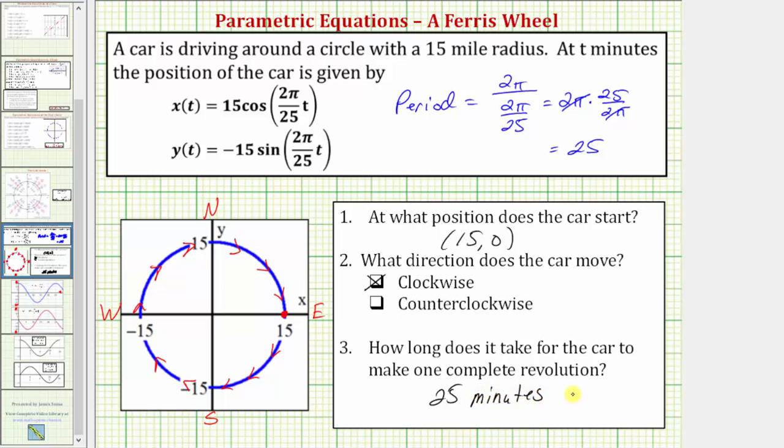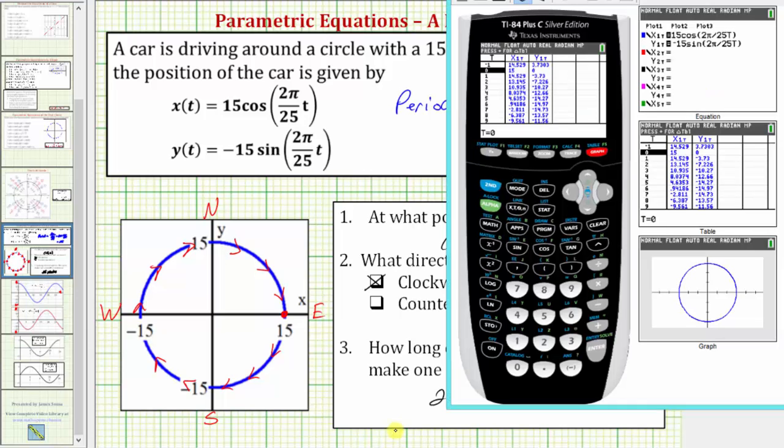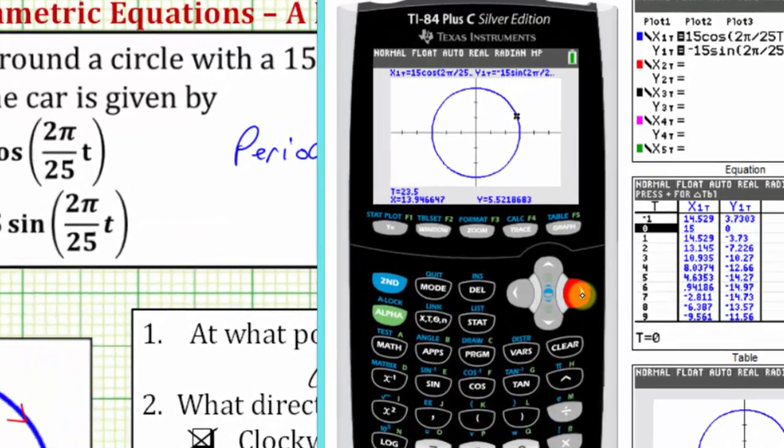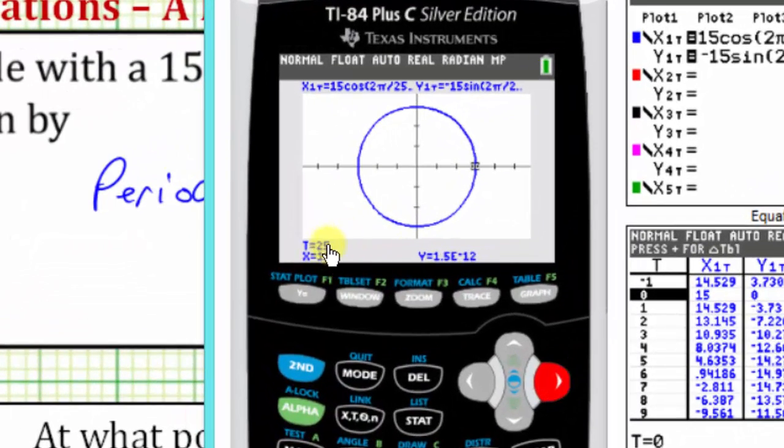If we go back to our graphing calculator one last time, and go back to the graph, if we press trace again, and keep going around the circle, notice how we'll return back to where we started, the point fifteen comma zero, I'm not sure if you can see it, but it says t equals twenty-five, and we're back to the starting position.